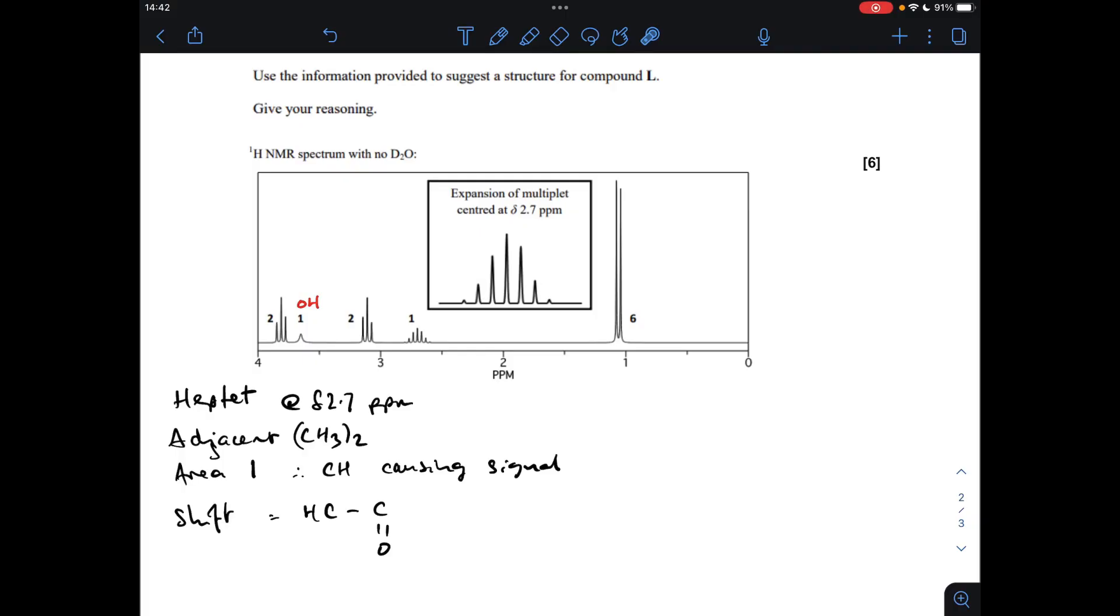Moving on to this signal here which we've got the expansion for. Hopefully you can see there's seven lines there, so that's called a heptet. That means there's an adjacent CH3 twice group, so two equivalent methyl groups adjacent to the proton causing that signal.